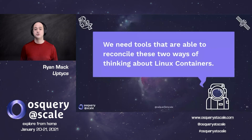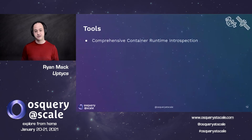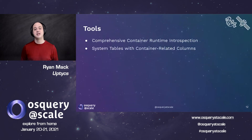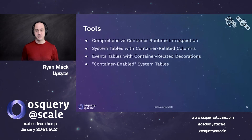So what are the tools available to us in OS Query for containers? The first is a comprehensive container runtime introspection. This basically means that if there's an API in your container runtime, you can expose that information in a query in OS Query. Next, system tables that have additional columns with information about the container environment they're running in. Events tables that have additional container-related information annotated onto your events. And last, what I like to call container-enabled system tables — tables that typically would operate on the file system mounted on the host, but where you can also look inside of running containers.